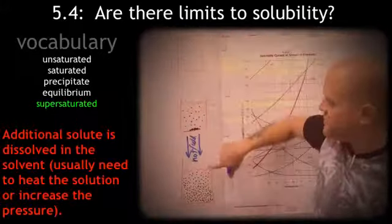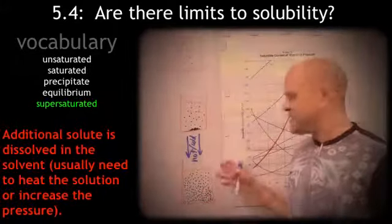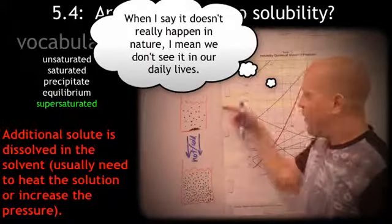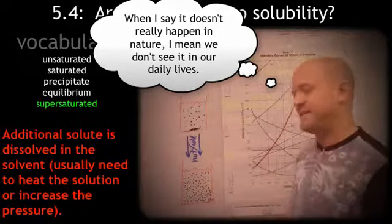You notice the concentration is actually increasing as we go down. So, supersaturated doesn't really happen in nature. Usually, what you have to do is increase the pressure, or increase the temperature, and then lower the temperature as well to get a supersaturated solution.